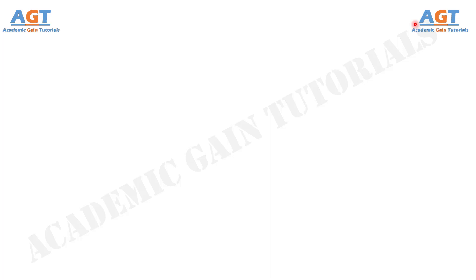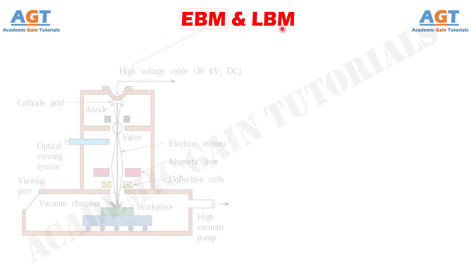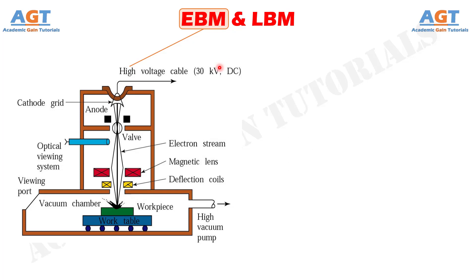Welcome to Academic Game Tutorials. In this video, we will look into the differences between electron beam machining and laser beam machining. In the electron beam machining process, a high velocity focused beam of electrons is used to remove the metal from the workpiece. This process is best suited for the micro cutting of materials.